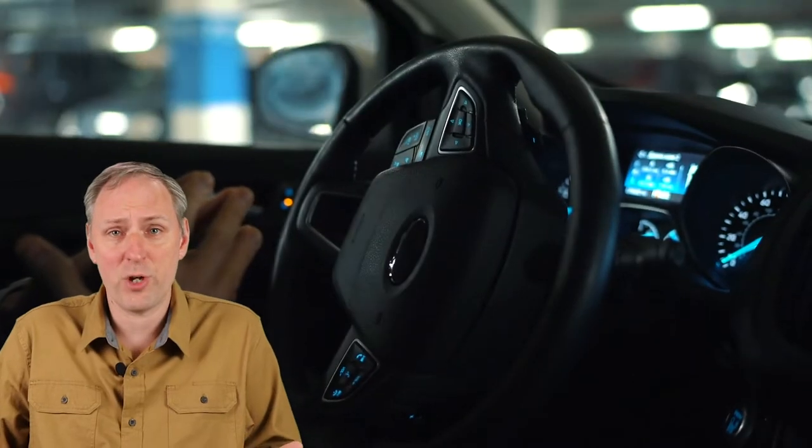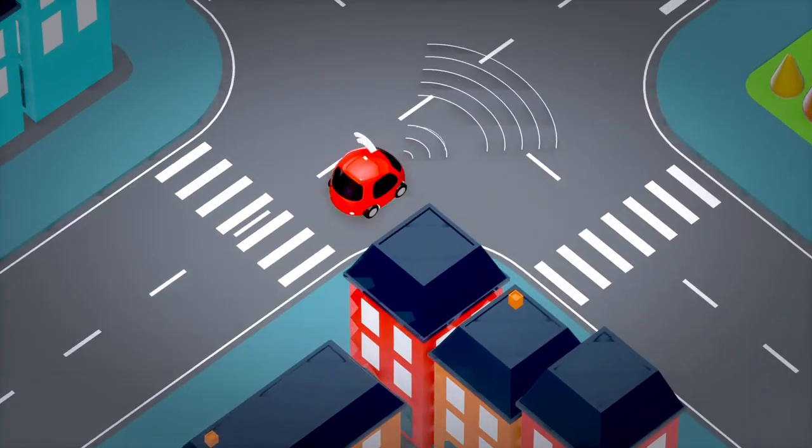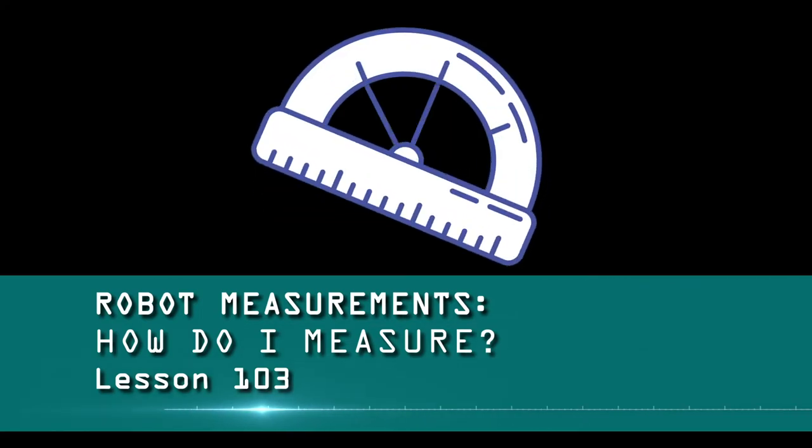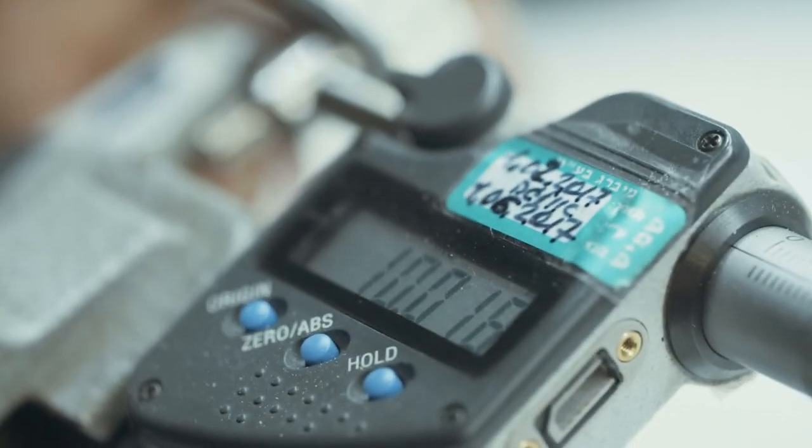So how does a robot keep track of distance? How does it know if it can fit into a space? A robot needs to be able to measure things: distances, size, angles, time, and other things. And we'll explore all that in this lesson.